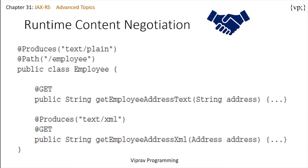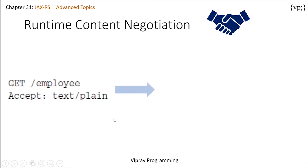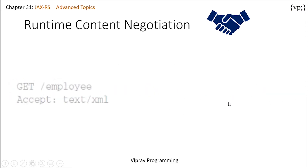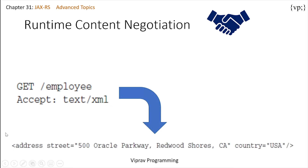Let's take a look at runtime content negotiation. The @Produces annotation says that getEmployeeAddressXML gets it in XML format. If you have a get employee method that accepts plain text, it will give out the address in plain text. But if you want it in XML, it will print out in XML format.